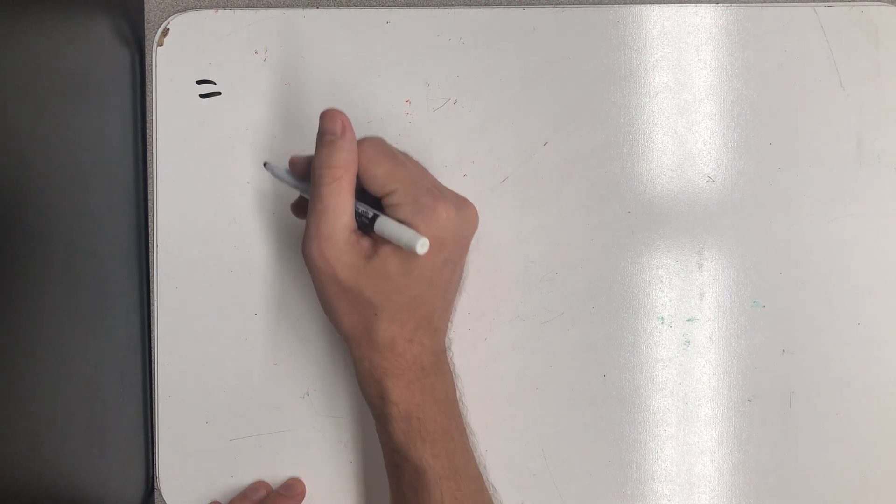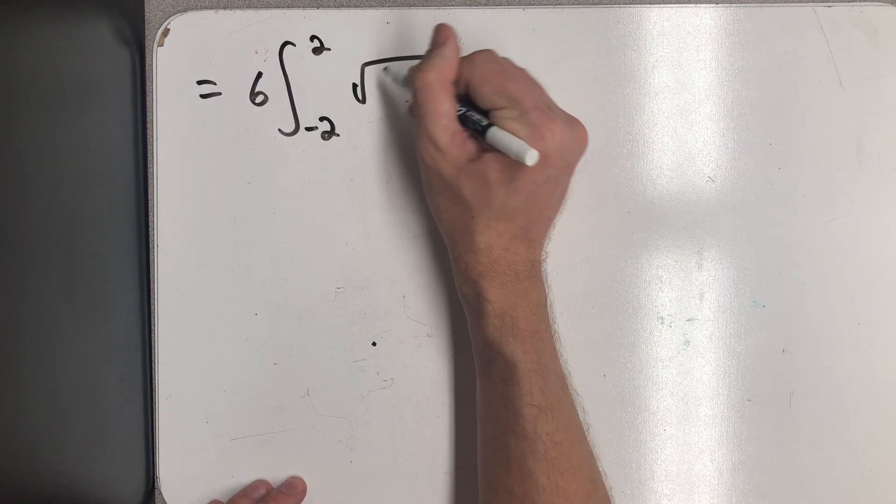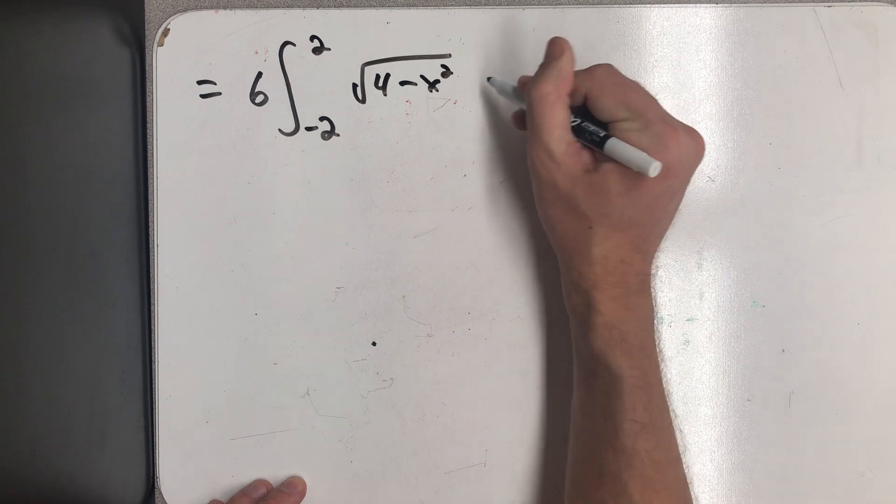All right, I'm hoping that you found out that simplified very nicely to be 6 times the integral from minus 2 to 2 of the square root of 4 minus x squared.